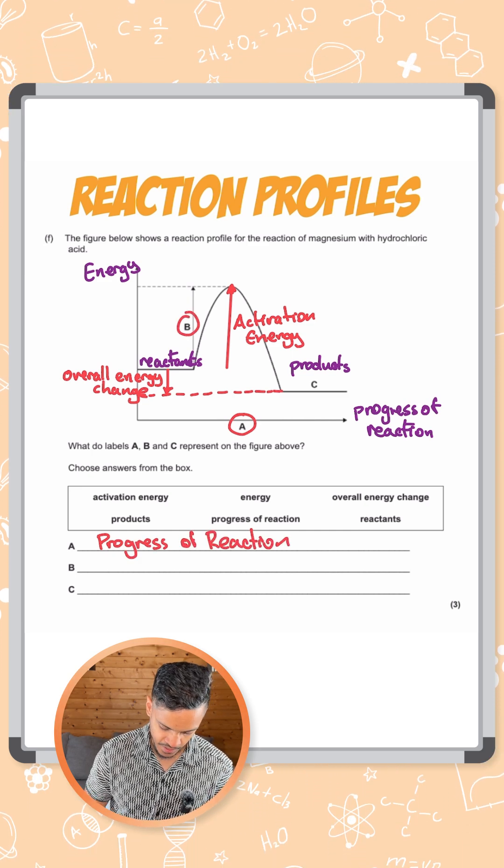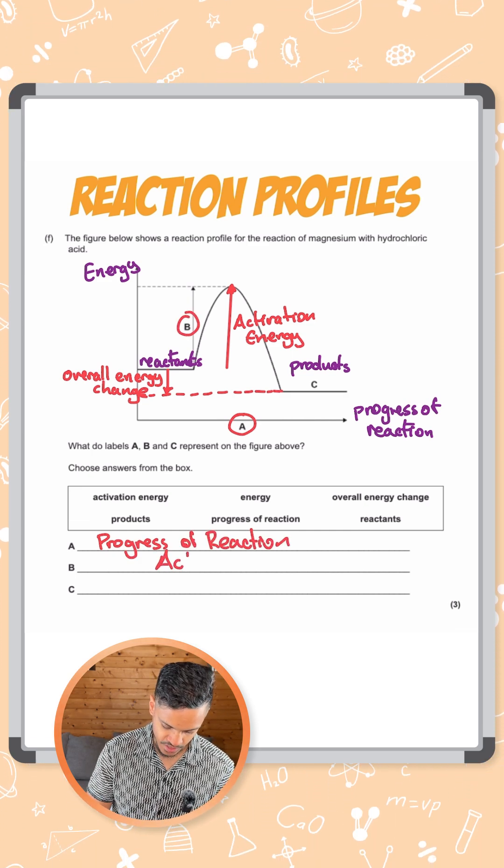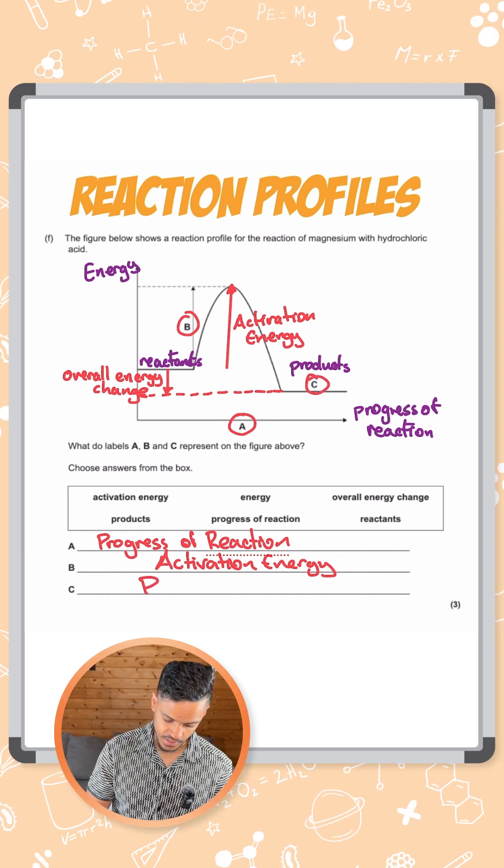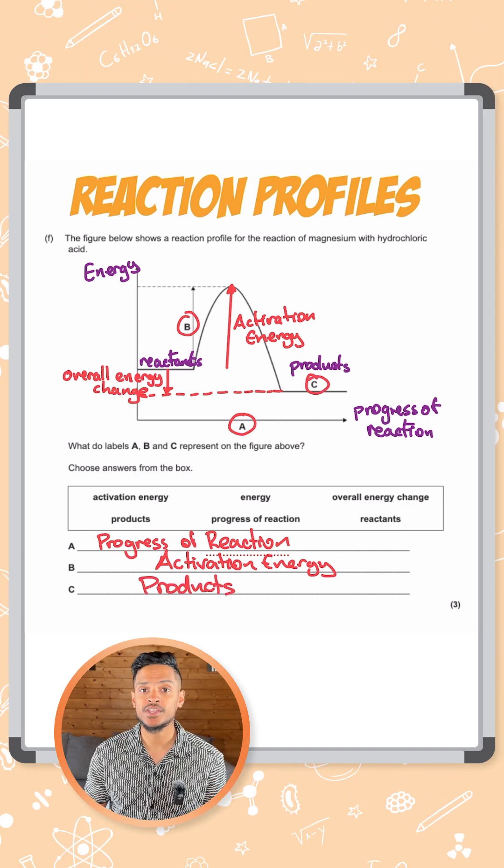B is this arrow here, which is essentially our activation energy. And C is our second flat line on the right, which is our products. Three points, three marks.